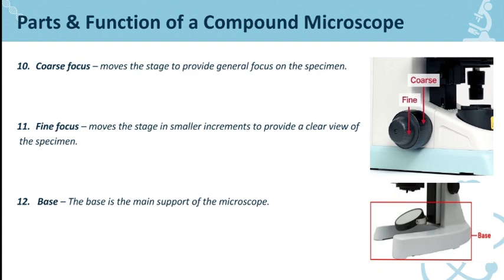Last is number twelve, which is the base. It is the main support of the microscope. Kung kanina nakita natin kung how important the arm is in order to hold the whole microscope, syempre kailangan natin ng base — kasi ito naman yung mismong magiging support ng microscope. Dahil kapag nakatayo yun, syempre kailangan natin ng base. Parang same lang sya ng importance ng arm, dahil kung wala itong parehas, walang susuporta doon sa may mismo microscope.